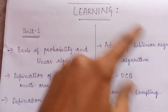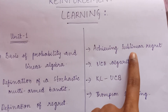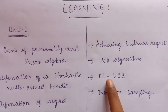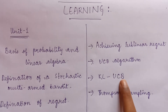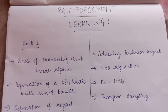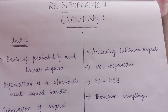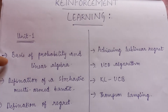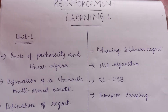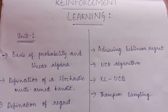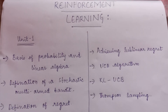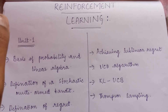Fourth one is achieving sublinear regret, fifth one is UCB algorithm, sixth one is KL-UCB, and last one is Thompson Sampling. In the coming videos we'll discuss each and every topic from first to seventh separately. There is a playlist that I'm making, so kindly watch through it.